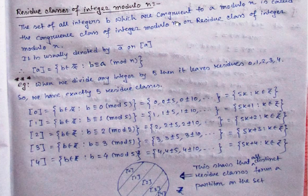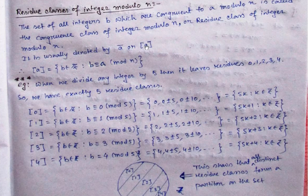B is any number; we are dividing B by N. Whatever integers B are congruent to when dividing by N — whatever remainder B gives after dividing by N — all those form a class, called the residue class. The residue class is denoted as A-bar or box(A), and box(A) equals the set of integers B belonging to Z such that B is congruent to A — that is the residue — under modulo N.